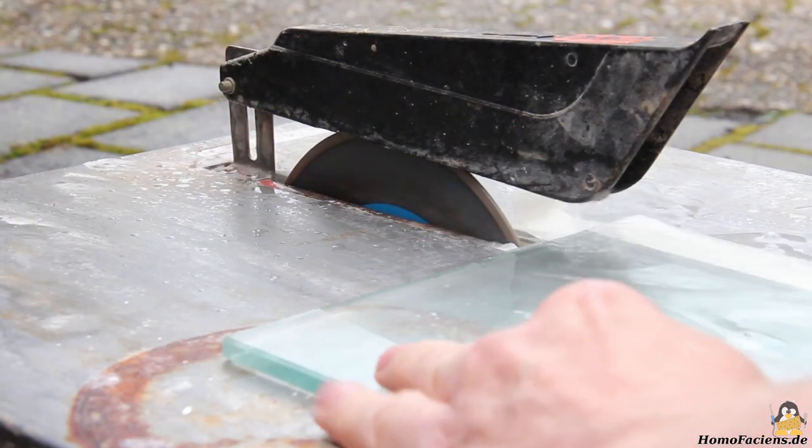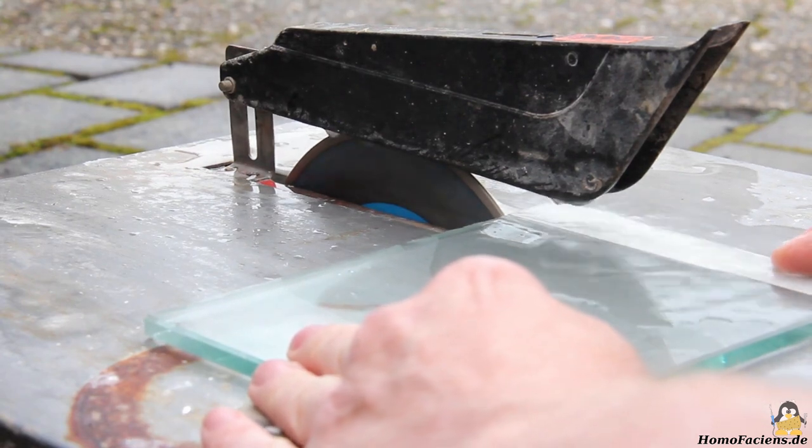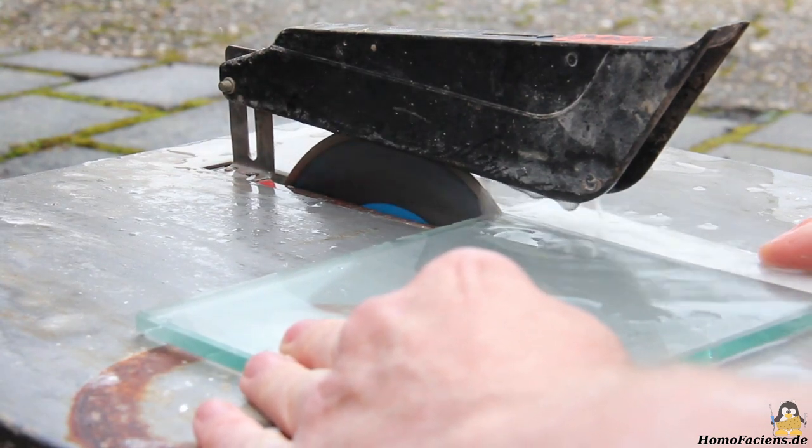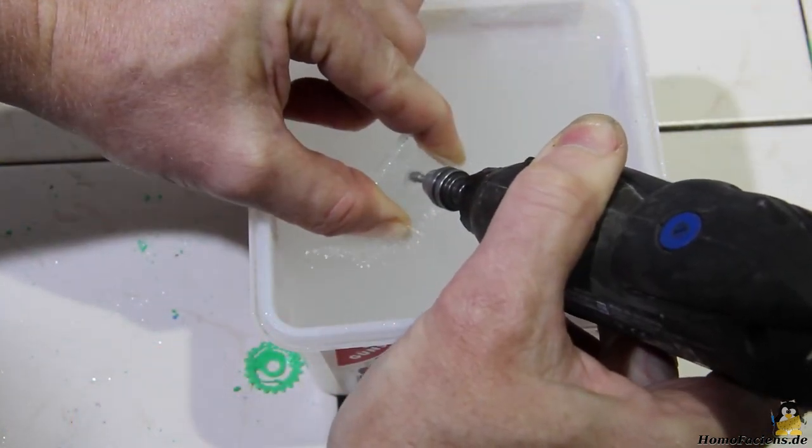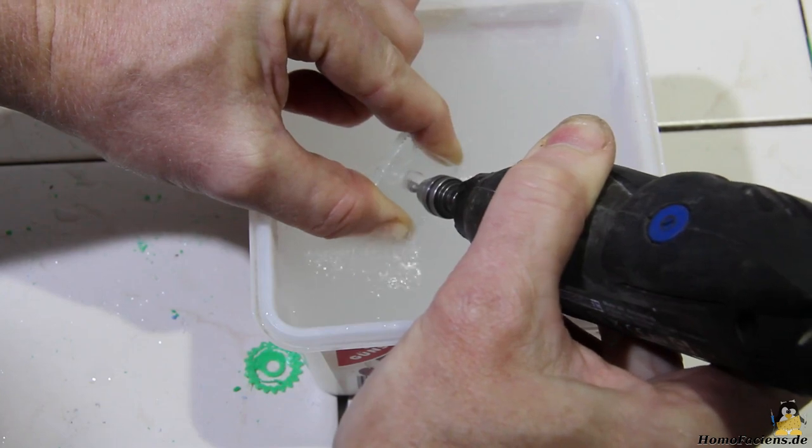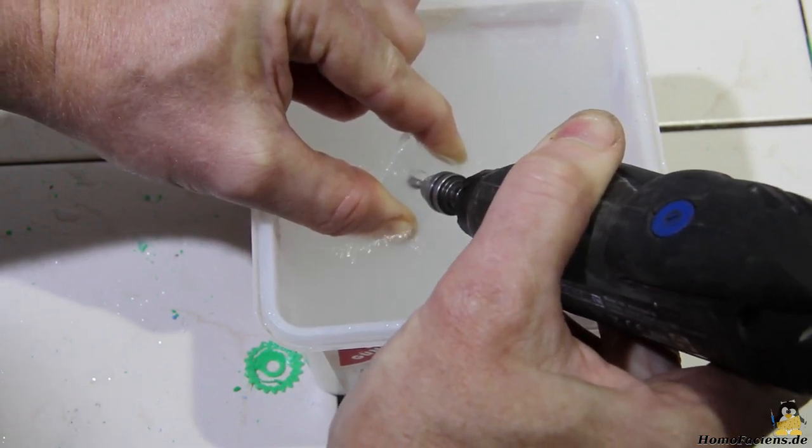I cut the 25x25mm block with the help of an electric tile cutter with water cooling for the diamond coated disc. Afterwards I drilled an approximately 9.5mm hole with a dremel and a diamond coated drill bit, also with water cooling.